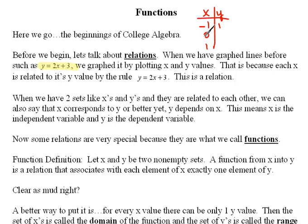And then we would use a 0. So 2 times 0 would be 0, plus 3 is 3. And then we would use a 1. So 2 times 1 is 2, plus 3 is 5.